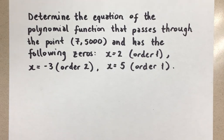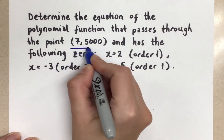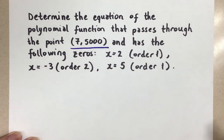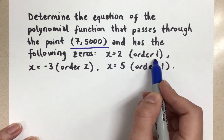So we're asked to find the equation of a polynomial function that passes through this point, (7, 5000), so that's our extra point that we're given, and we need that to find the a value of the function. And it has these zeros. So we have a zero at x equals 2, and that zero is order 1,